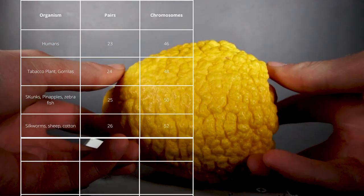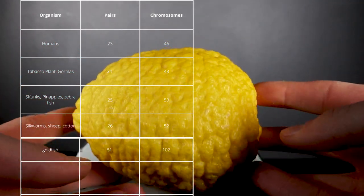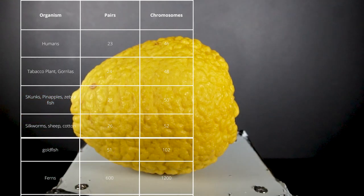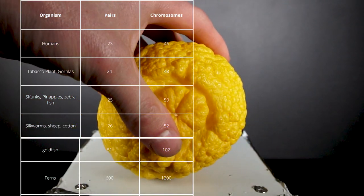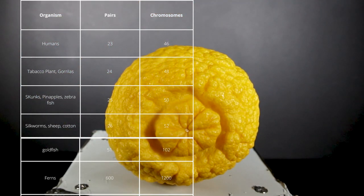Silk, sheep, and cotton all have 26 pairs. Goldfish have just over 50 pairs, and this list goes on and on until we finally come to things like the adder's tongue, which has just over 600 different pairs.